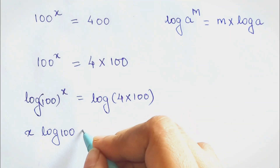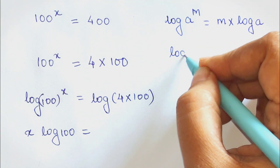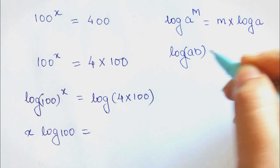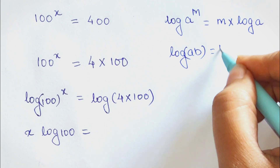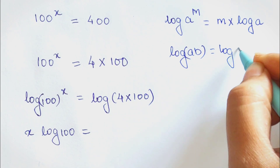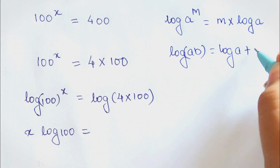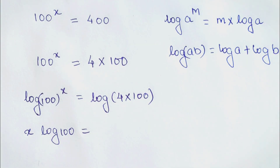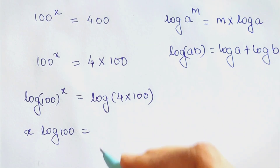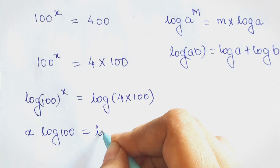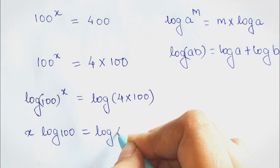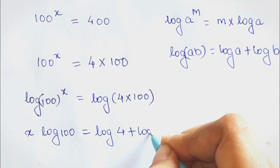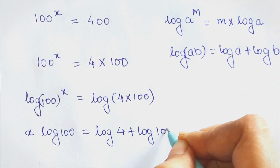When you have the log of a product, it can be written as log of a plus log of b. So this now looks like log of 4 plus log 100.